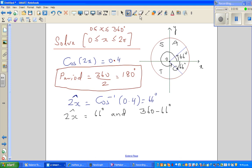Or we can write 360 minus the reference angle, which is, so 2x reference is 66 degrees and 360 minus 66.